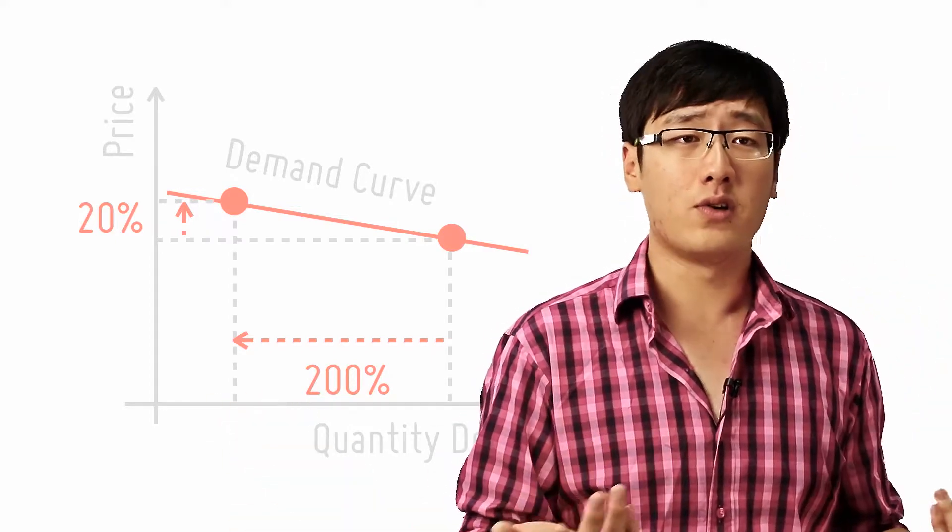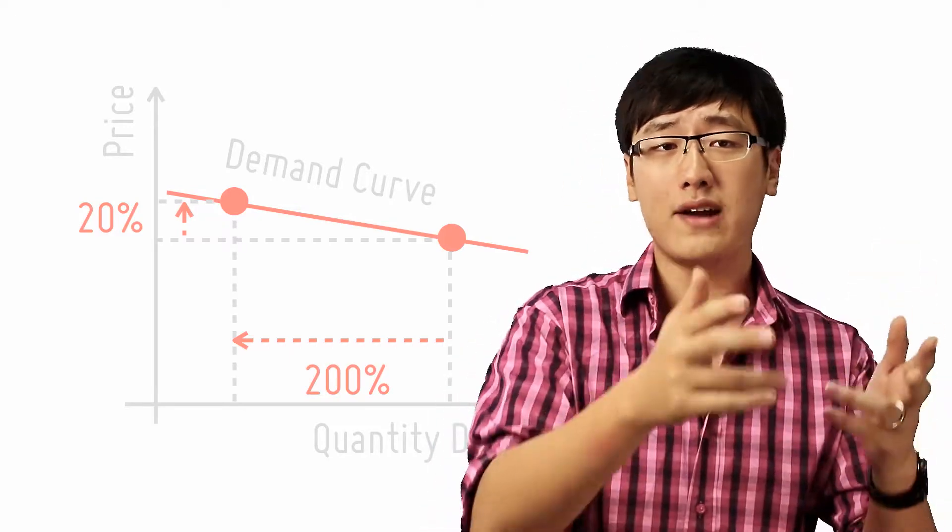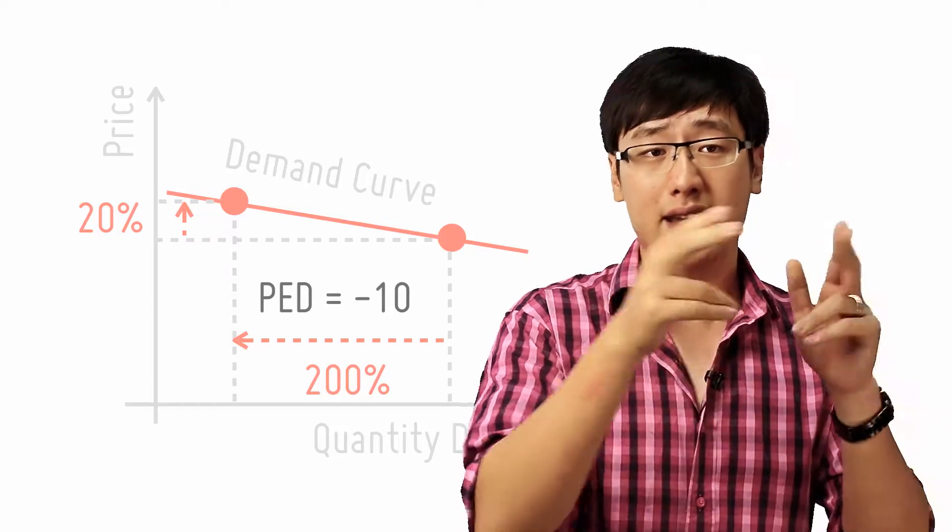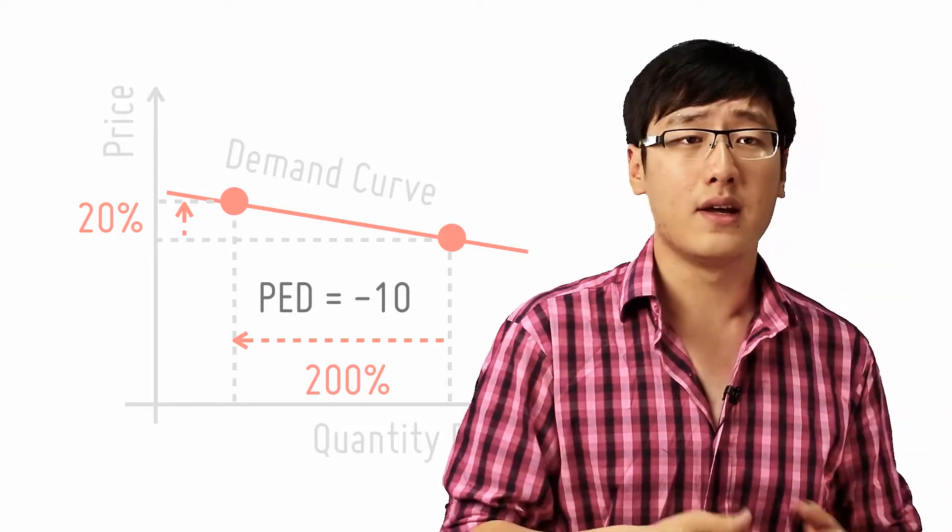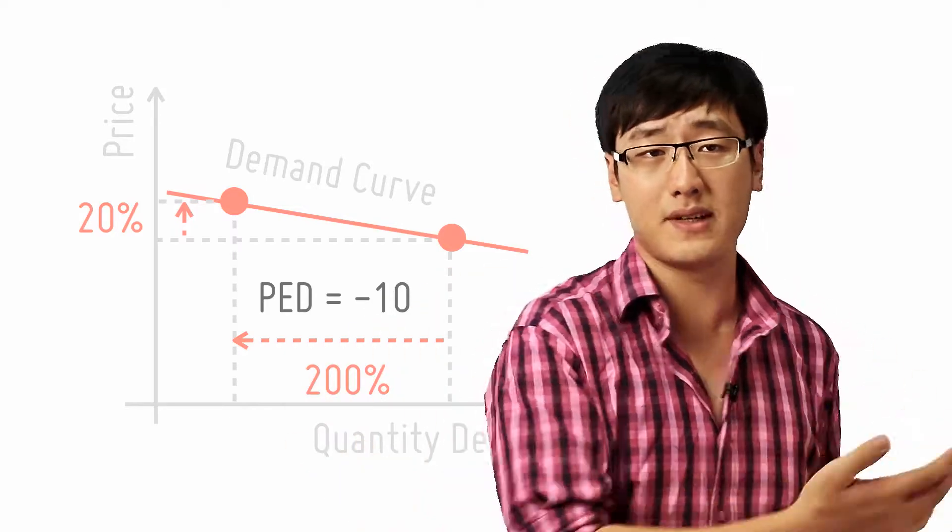Because, you know, 200 divided by 20. Wrong. Because it's negative 200 divided by 20. So it's negative 10 because quantity demanded and the price move in opposite directions.